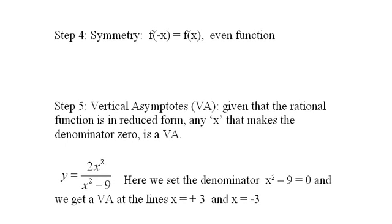Vertical asymptotes. Given a rational function in reduced form, any x that makes the denominator 0 is a vertical asymptote. So we set the denominator, x squared minus 9, equal to 0 to find out when we're going to have 0 in this denominator. And we get x equals plus 3 and minus 3.